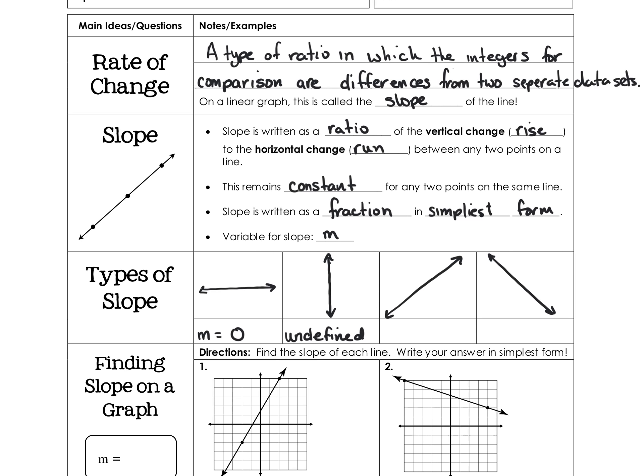A vertical line is undefined because the run — the horizontal difference — is zero. In a fraction, placing zero in the denominator gives an undefined value, which is something you've known since you were younger.